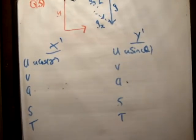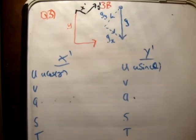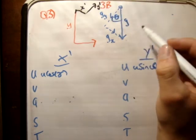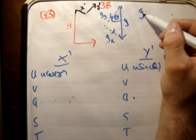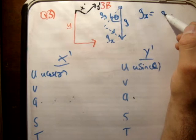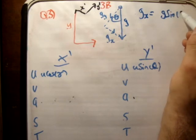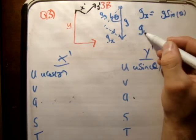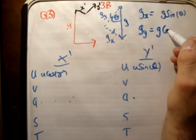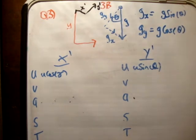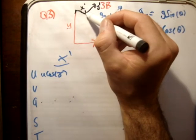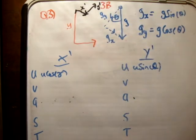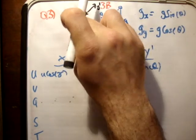Alright? So that means we have theta up here. And we're going to get g sub x is equal to g times the sine of theta. And g sub y is equal to g cos theta. Now, is that all? The answer is no. Look at the directions here. g sub x is parallel to the positive x-prime direction. So it's going to accelerate your particle.